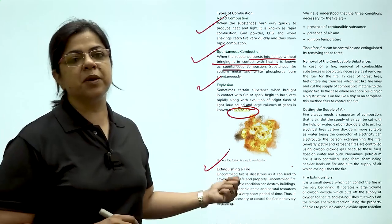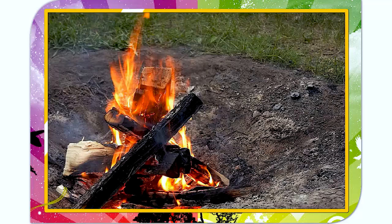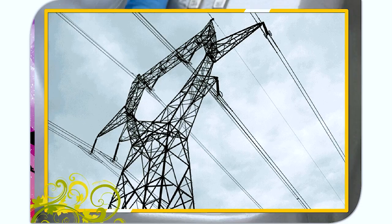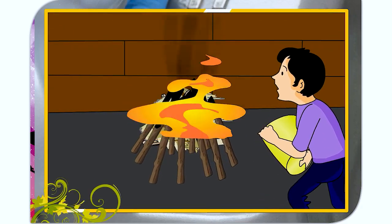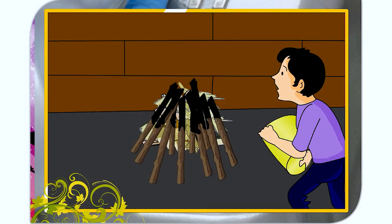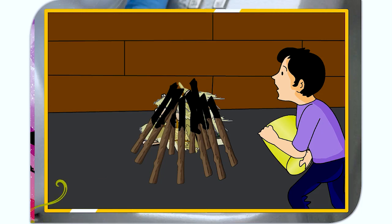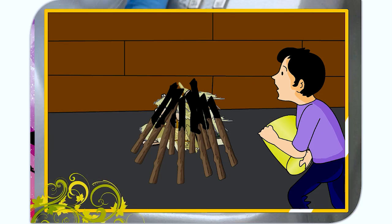So extinguishing a fire. Let us understand about this now. Fire can be caused by petrol, electricity, etc. In case a fire breaks out due to a combustible substance like wood or paper, it can be put off by throwing water on it. Water cools the combustible substance below its ignition point. Also when the water is heated by the fire, it forms water vapor which surrounds the combustible material, helping in cutting off the supply of air, thus extinguishing the fire.